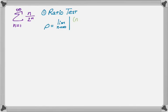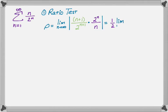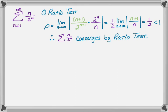The (n+1)th term is (n+1)/2^{n+1}, and we multiply by the reciprocal of the nth term, which is 2^n/n. We take this limit. You can simplify 2^n over 2^{n+1} to just one half and factor that out. So I get one half times the limit of (n+1)/n as n goes to infinity, and that limit is definitely one — n to the first over n to the first goes to one. So rho equals one half, which is less than one, and therefore the series converges by the ratio test.